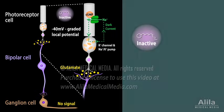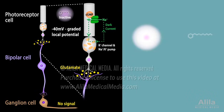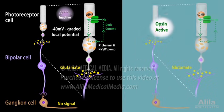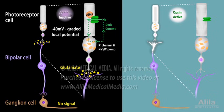As the retinal absorbs light, it changes to the trans form and disassociates from the opsin, which now becomes an active enzyme. The enzyme degrades cGMP, the sodium channel closes, dark currents stop, and so does glutamate secretion. The drop in glutamate tells the bipolar cells that light has been absorbed.